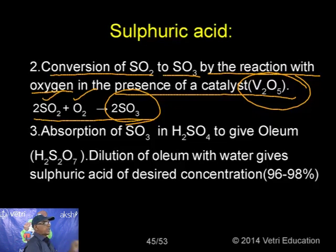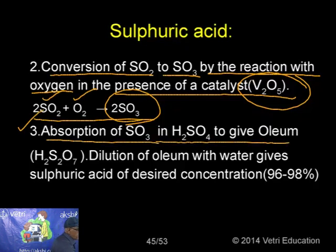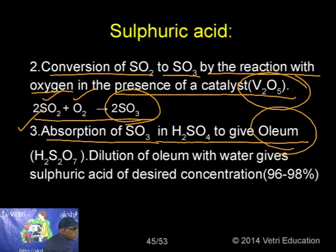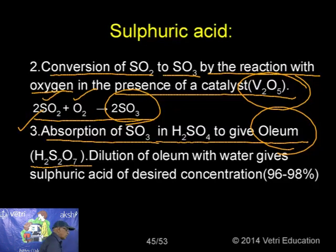Uses of sulphur dioxide: in refining petroleum and sugar; in bleaching wool and silk; as an anti-chlor, disinfectant, and preservative; and as a solvent for many organic and inorganic compounds and in many organic reactions.